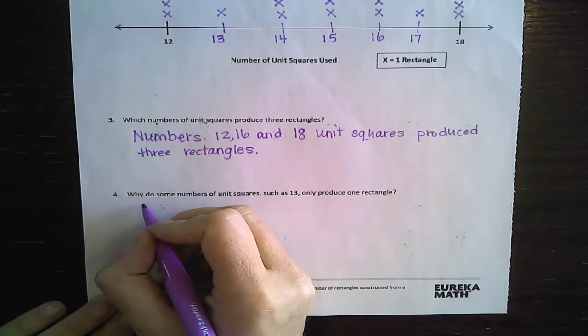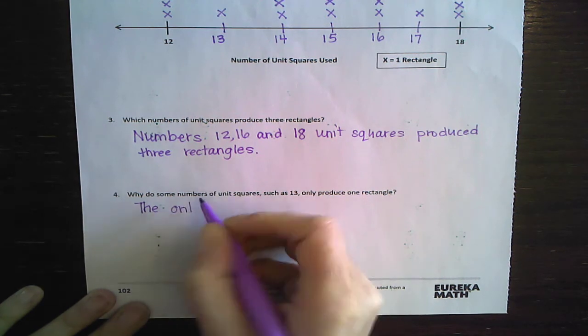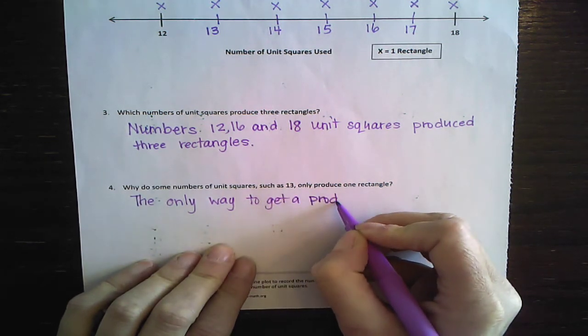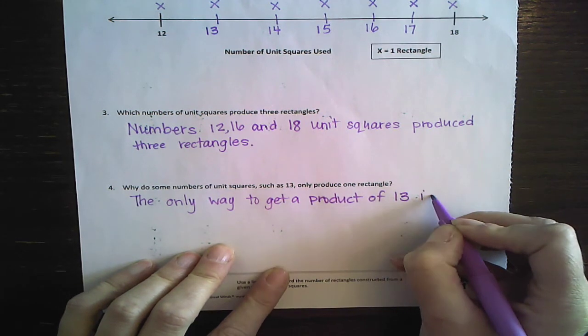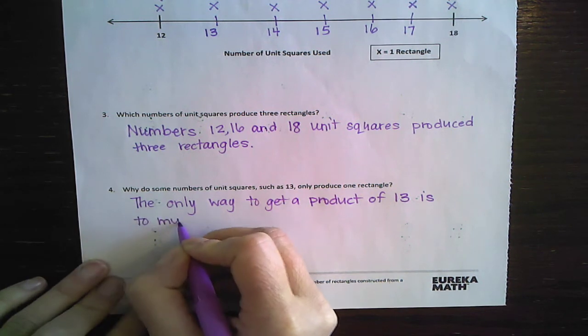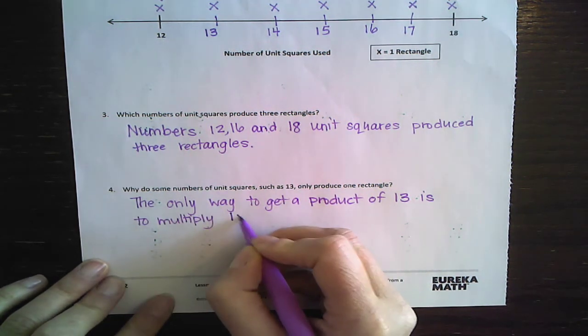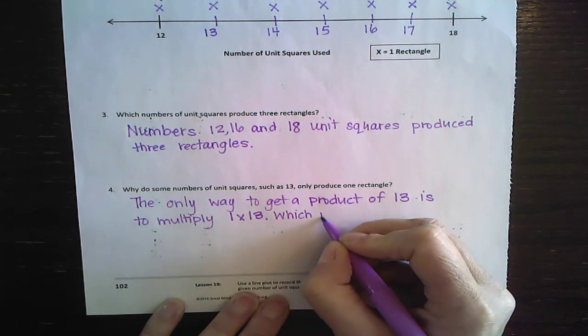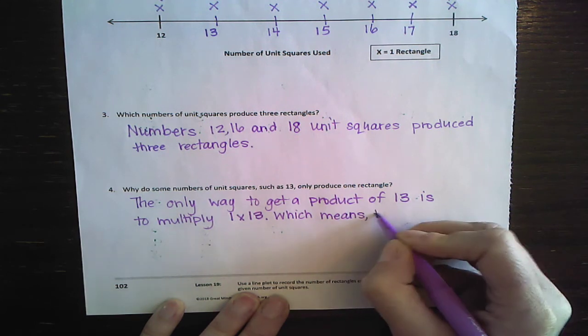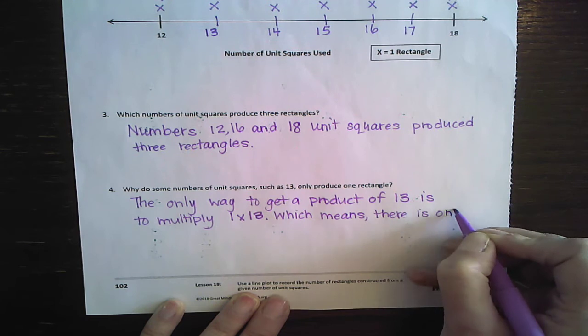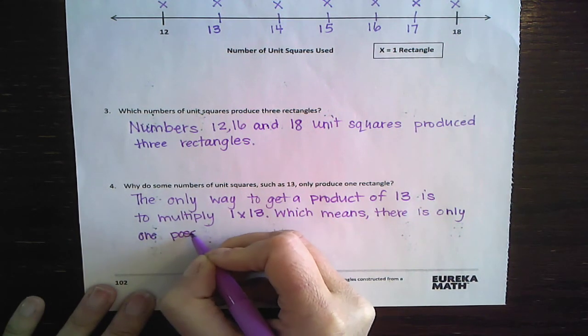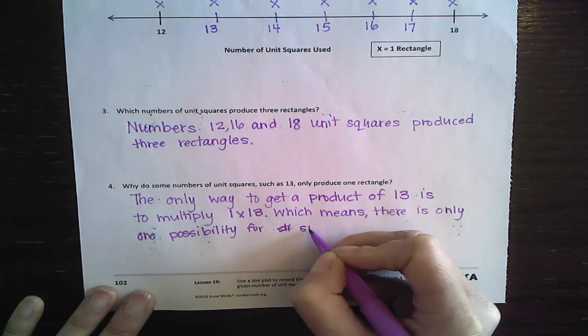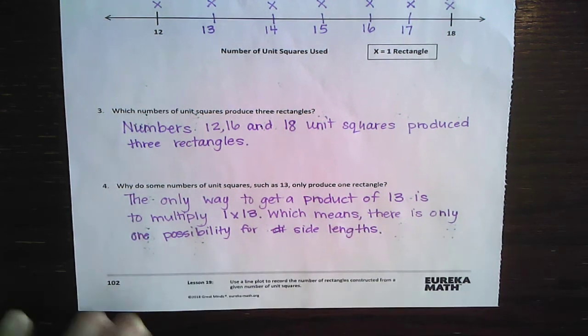So let's write that down. I'm going to say the only way to get a product of 13 is to multiply one times 13, which means there is only one possibility for side lengths. What am I writing right there? Side lengths.